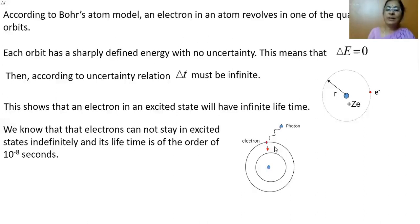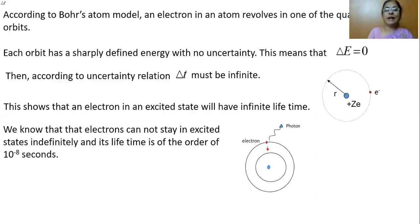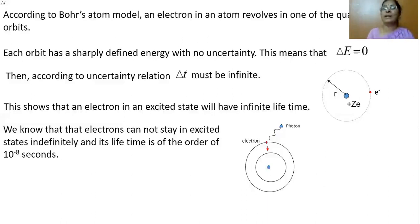We know that electrons cannot stay in an excited state indefinitely — its lifetime is of the order of 10 to the power minus 8 seconds. So if an electron gets energy and gets excited to an excited level, it will return back to the ground state by emitting the excess energy in the form of a photon. For example, when we put on a lamp in our house, the electrons of the atoms derive electrical energy from the electrical supply and get excited.